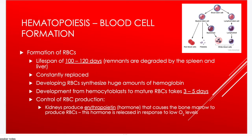Red blood cells live about 100–120 days (three to four months). When worn out, they are broken down by the spleen and liver and must be constantly replaced. As they develop, they produce large amounts of hemoglobin to carry oxygen. The maturation process from hemocytoblast to mature red blood cell takes about three to five days. The kidneys produce a hormone called erythropoietin that signals the bone marrow to produce red blood cells.